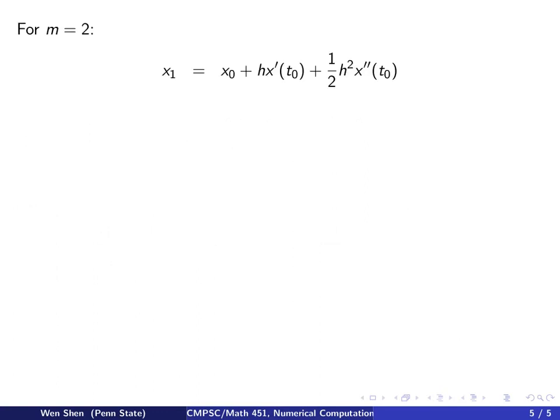Now let's look at m equals to 2. This means we will have to include an additional term comparing to m equals 1. That term involves the second derivative of x and is multiplied by h square and half. We need to get an expression for this higher derivative.